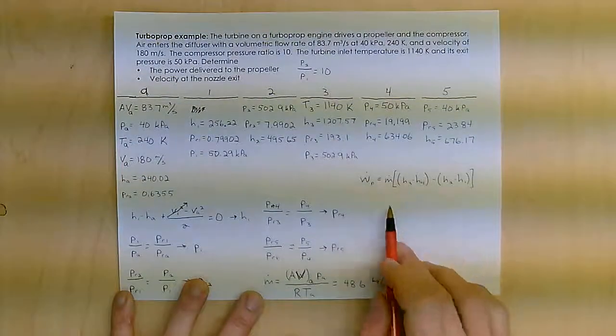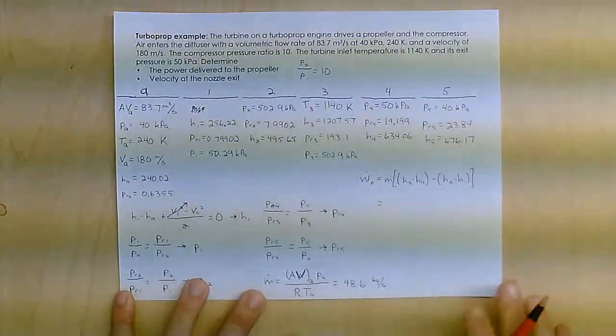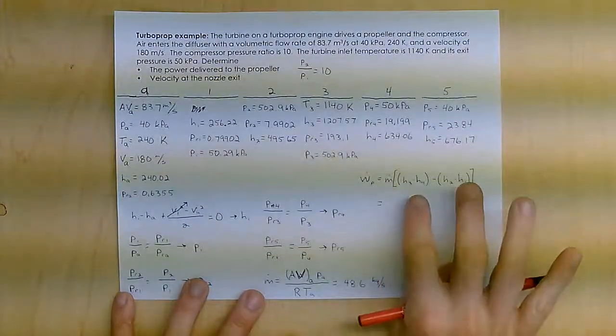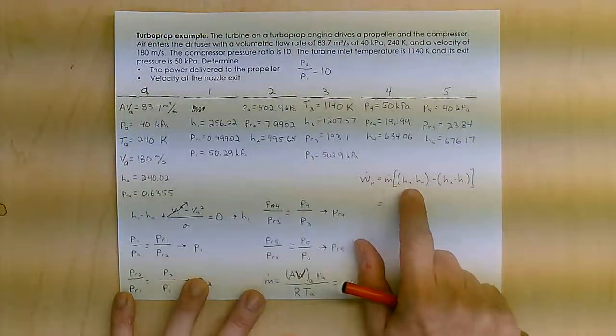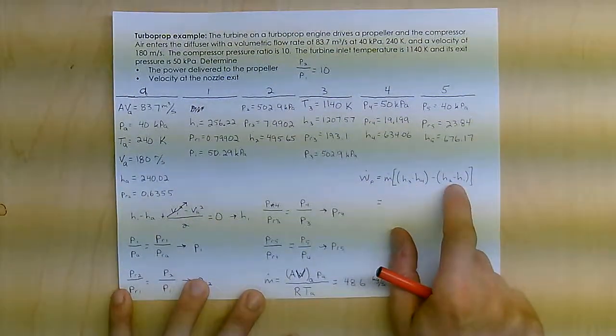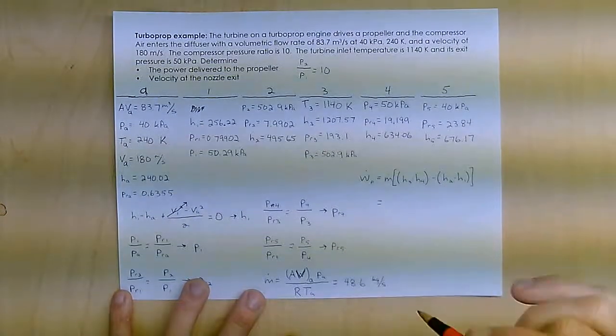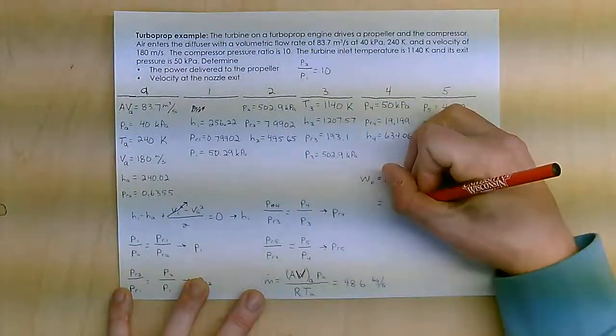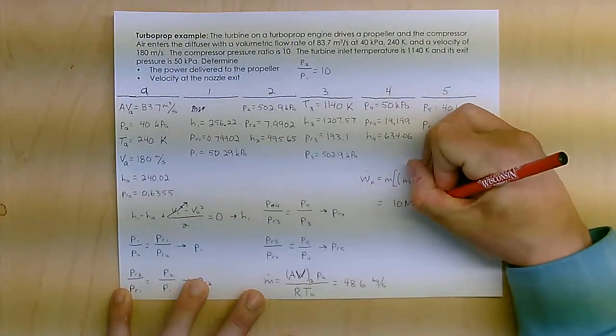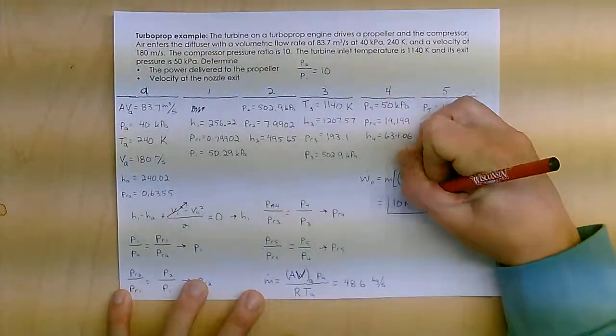Knowing that mass flow rate, knowing all my H values, I can find the work delivered to the propeller, which is what's left over after the turbine finishes running the compressor. And what's left over is 10 megawatts of power when I plug in all of my H values there.